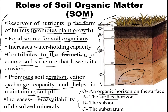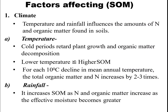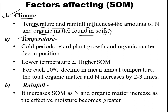Now let's talk about factors that affect soil organic matter. Number one is climate. Temperature and rainfall influence the amount of nitrogen and organic matter present in the soil. Regarding temperature, cold periods retard plant growth and organic matter decomposition, so lower temperature corresponds to higher soil organic matter.